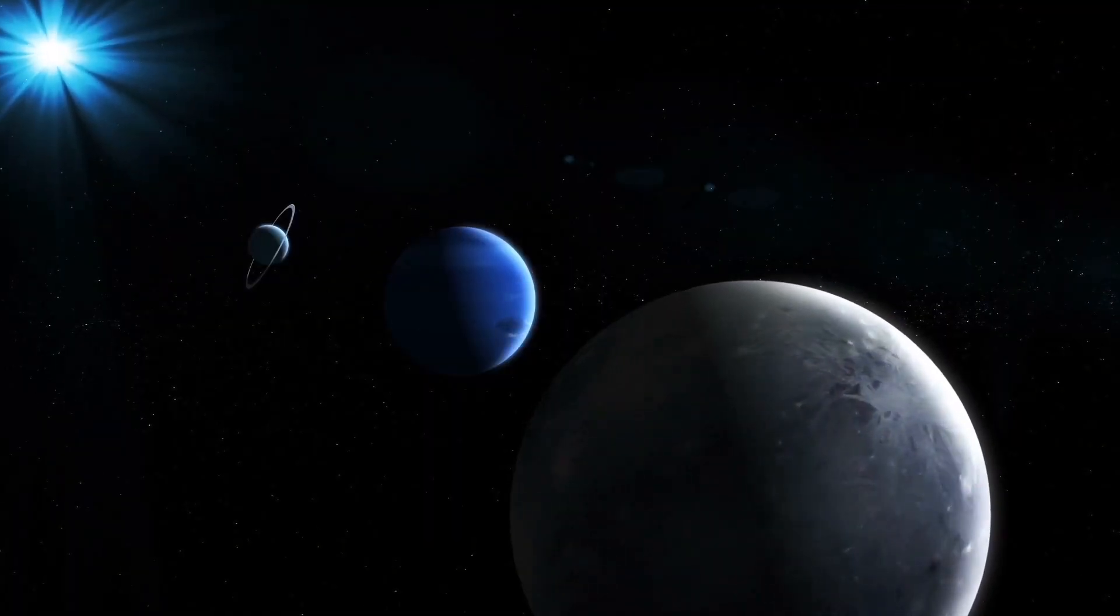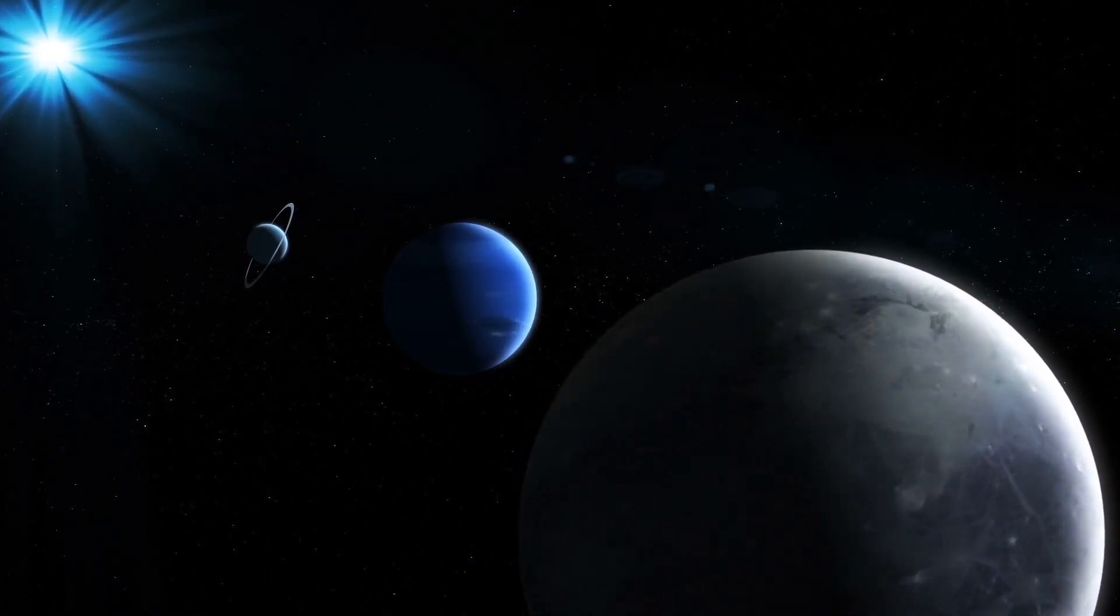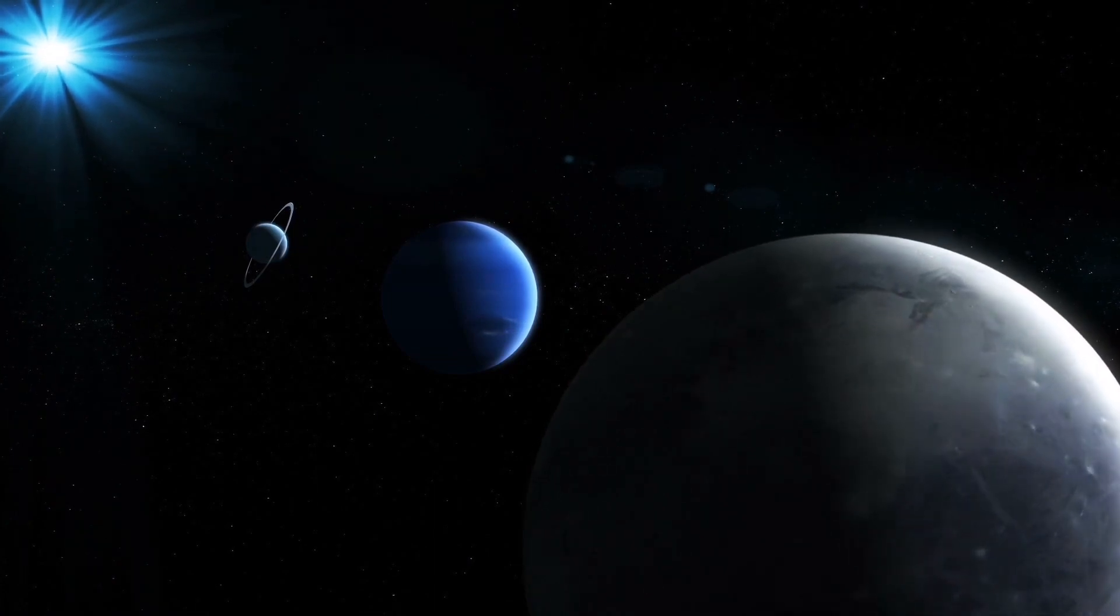Planets are large objects that orbit around a star. They are usually spherical in shape and do not produce their own light.